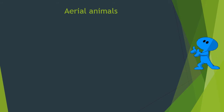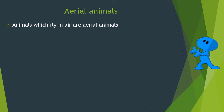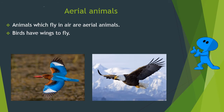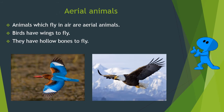Animals which fly in air are aerial animals. Birds have wings to fly, and they have hollow bones to help them fly. For example: kingfisher, eagle.